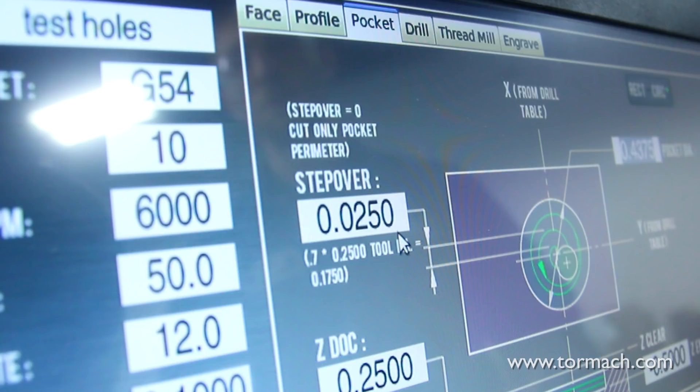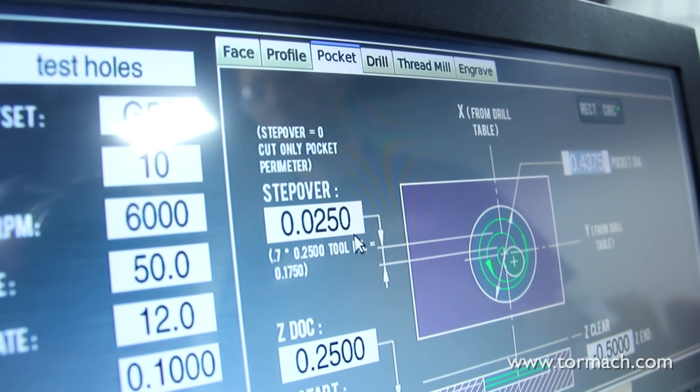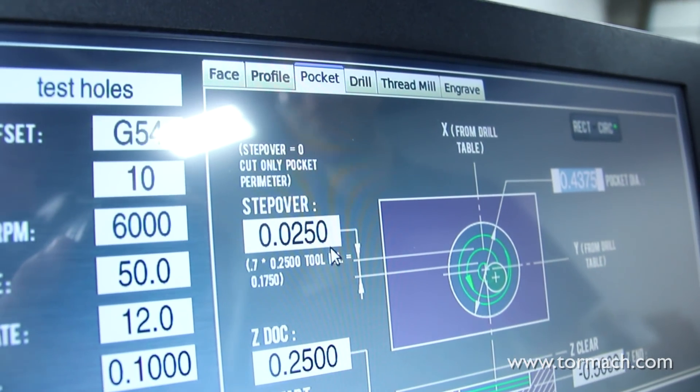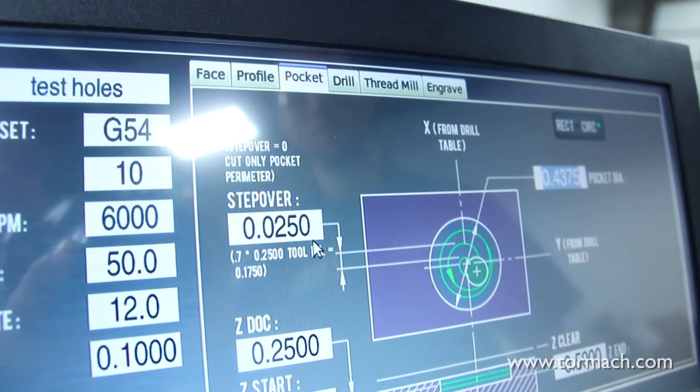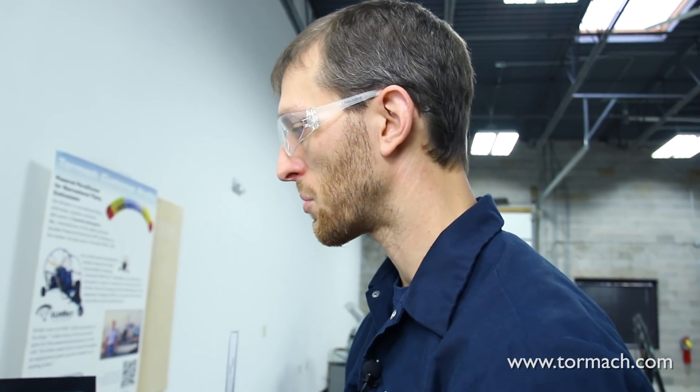For example, if we wanted to use that thread milling cycle as our roughing and we wanted to come back and make that hole a couple thousandths bigger to fit a dowel pin or fit a component in, we can come back and take a single pass around that hole. We'll go ahead and do that here.